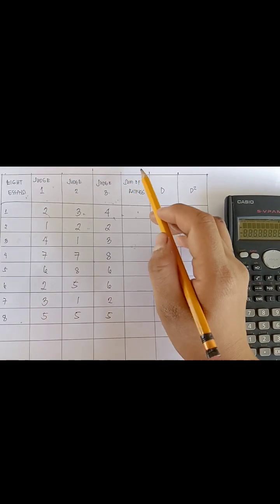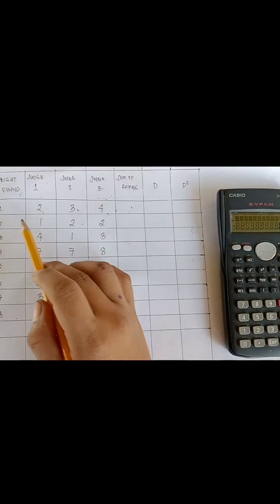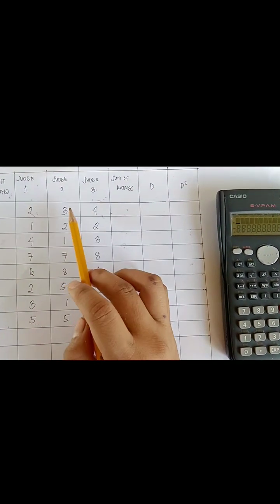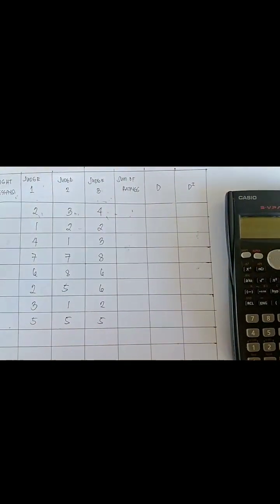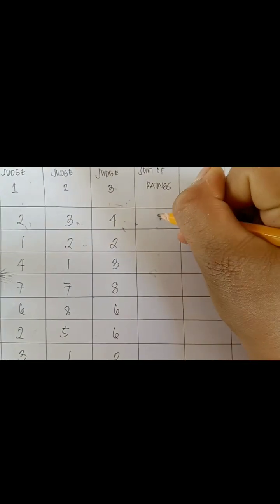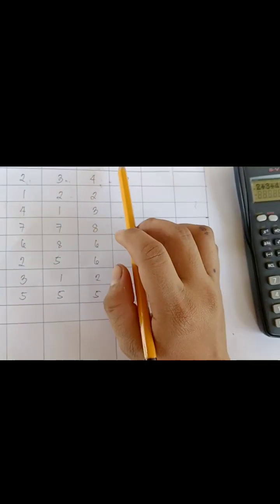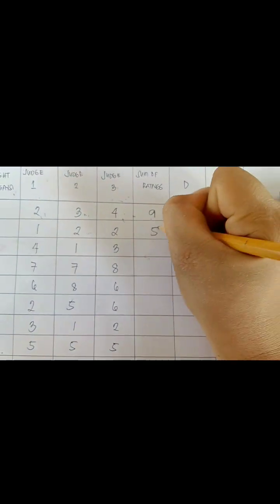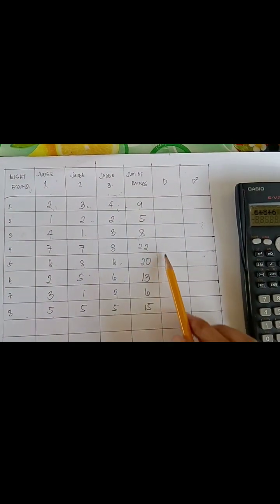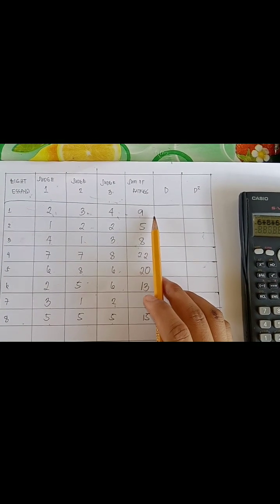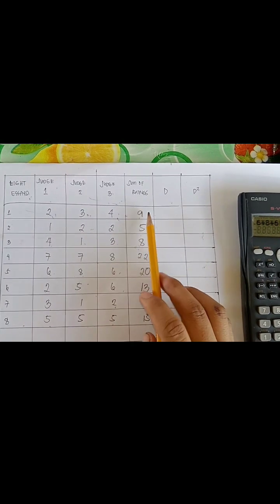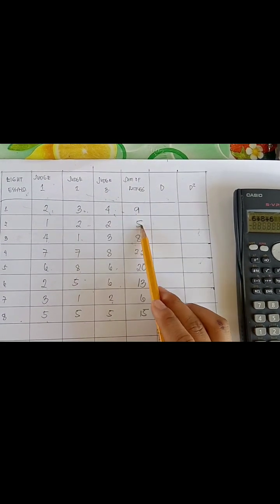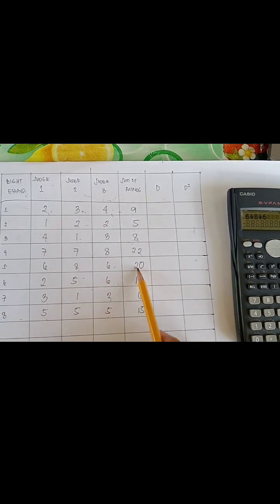First thing we are going to do is to obtain the sum of the ratings from each row by simply adding 2 plus 3 plus 4 is equal to 9. And then the same mathematical operation we are going to apply for the rest. We have 1 plus 2 plus 2 is equal to 5.